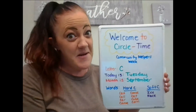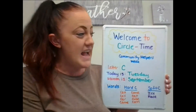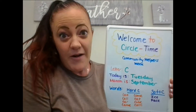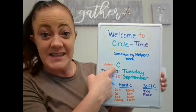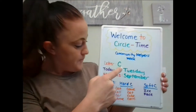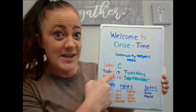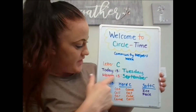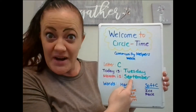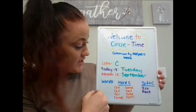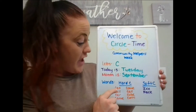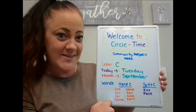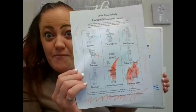Good morning everybody and welcome to Circle Time. This week it's all about community helpers. Our letter of the week is C. Our day today is Tuesday. The month is September. We're gonna talk about the two different sounds C makes, then we're gonna review some words, and then we get to play a game of bingo.